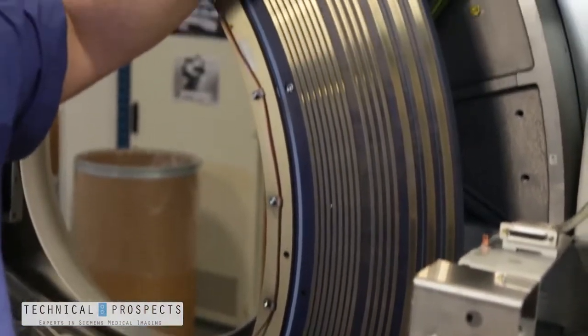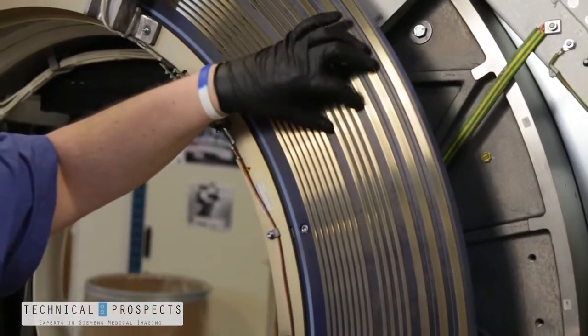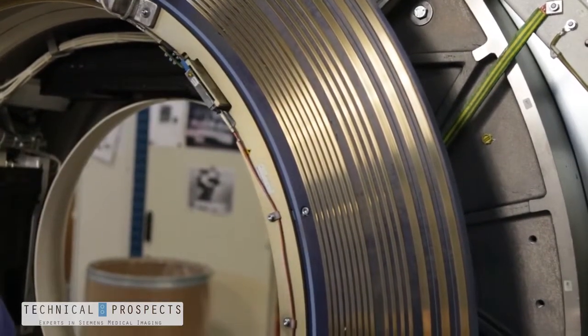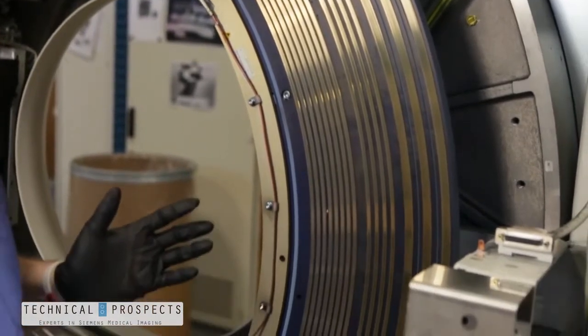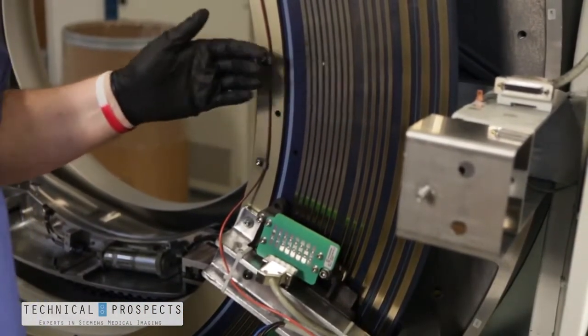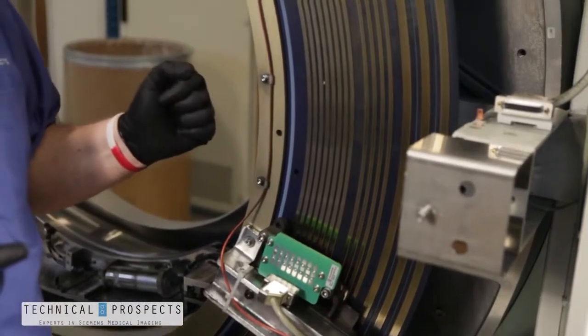We should be looking at our high voltage slip rings, our low voltage slip rings, and our data brush slip rings in this particular slip ring system. This happens to be a Siemens Sensation system, so we have this particular configuration. Your configuration may change based on your system.